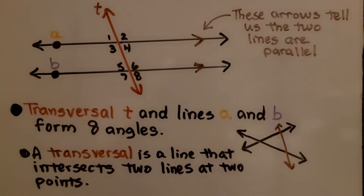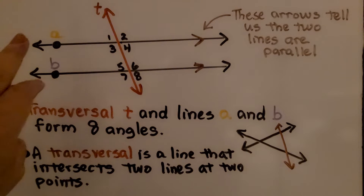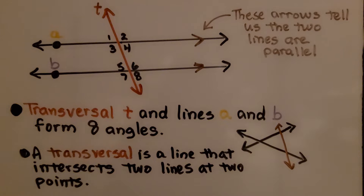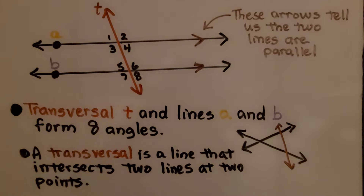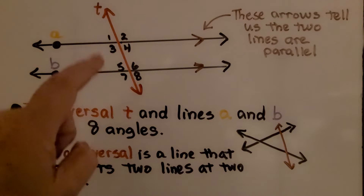Here we have a set of parallel lines, A and B. We know they're parallel because those arrows tell us the two lines are parallel. Transversal T, this red line, and lines A and B form eight angles.